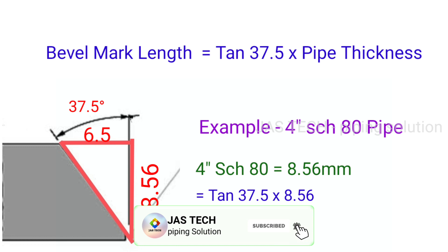equals tan 37.5 times pipe thickness. For example, 4 inch schedule 80 pipe: 4 inch schedule 80 equals